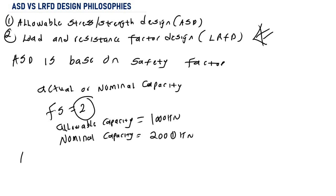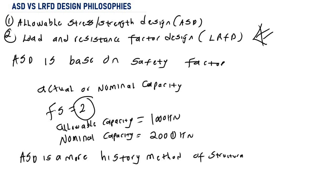ASD is a more historical method of structural design, and it involves the use of a factor of safety, which may be based on experience. Because we are dealing with manufactured products, instead of applying just a single factor of safety to the load, in LRFD we can apply a factor to both the load and to the resistance, in order to account for uncertainties.